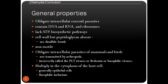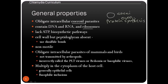The general properties of Chlamydia: they are obligate intracellular parasites and coccoid in nature — circular in shape. They contain DNA as well as RNA and have ribosomes, so they can synthesize their own proteins. They can also hijack the protein synthesis machinery — DNA, RNA, and ribosomes — from the host cell. However, they lack ATP and biosynthetic pathways, so they must rely on the host cell for their growth.